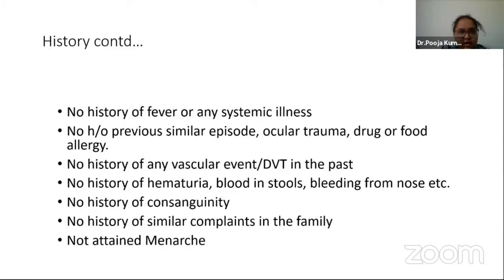On further probing, we took a history of fever or any systemic illness, but she denied any fever. There were no similar complaints in the past, no history of trauma, no drug or food allergy, no vascular events or deep vein thrombosis, no hematuria or bleeding. No family history of cancer or similar complaints. She had three elder siblings, all well. She had not yet attained menarche.